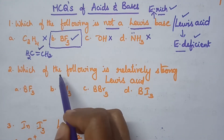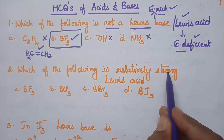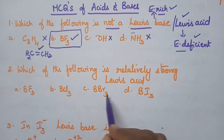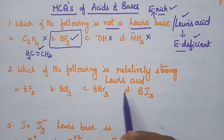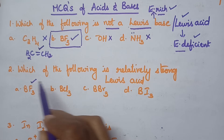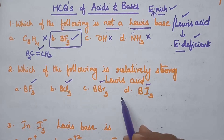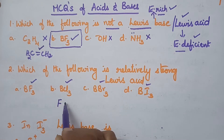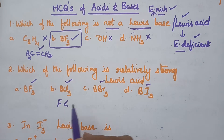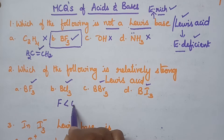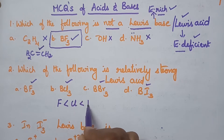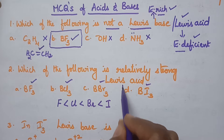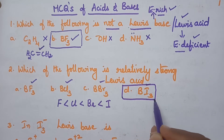Coming to the second question: which of the following is relatively the strongest Lewis acid? The given options are BF3, BCl3, BBr3, and BI3. All of them are Lewis acids; the only difference is with respect to the anions. As the size of the anion increases, the strength of the Lewis acid also increases. So fluoride is less acidic than chloride, which is less acidic than bromide, which is less acidic than iodide. Therefore option D, boron triiodide (BI3), is the strongest acid.